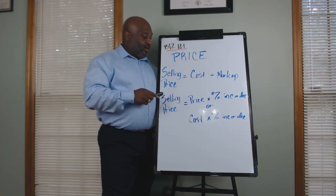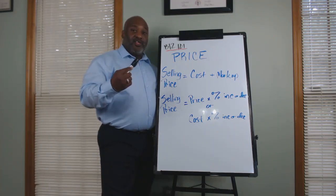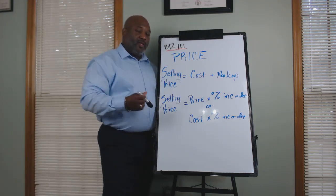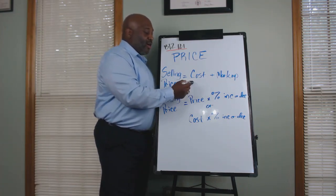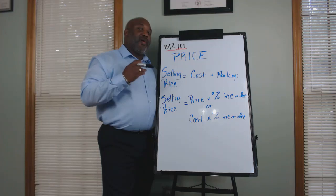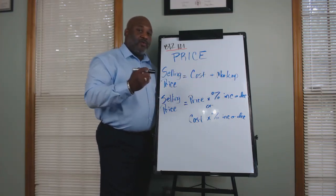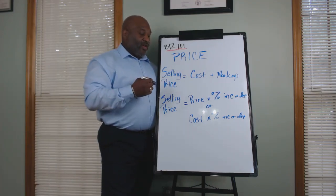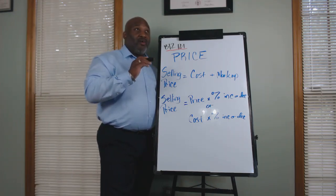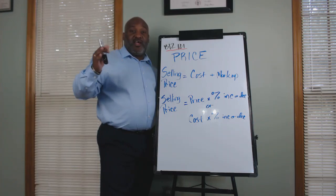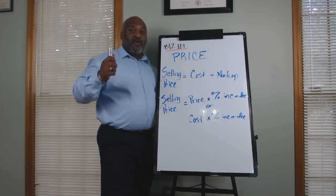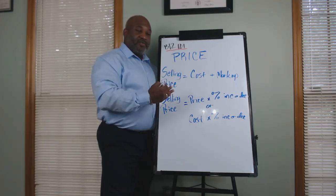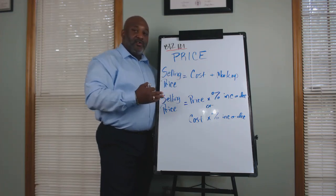What we're going to do right now is look at the different ways to derive a selling price. The first one is: selling price equals cost plus markup. Cost is the actual dollar amount it takes to make a particular product or item, plus the markup — the dollar amount we add to it. For example, say we're making bikes. If it costs $10 to make a bike — the frame, the tires, the seats, the handlebars — and our markup is $10, we're going to sell the bikes for $20.